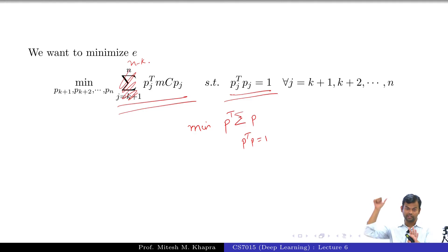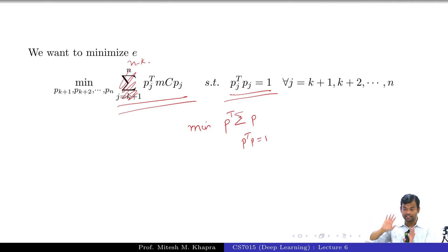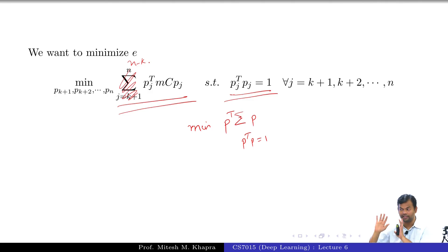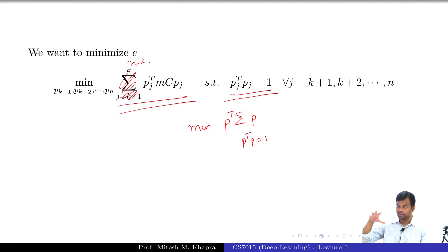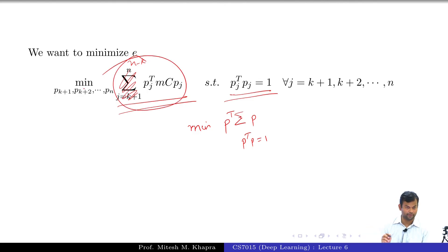Now I am talking about the smallest eigenvalues, but in the first solution I said we need to pick the largest eigenvalues. What is the difference? These are the ones we are throwing away — these are the ones along which the error is going to be minimum. If we throw these away, the error is going to be minimum. So we throw away the last n minus k dimensions, which means we keep the first k dimensions — you have arrived at the same solution.